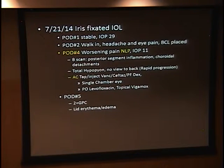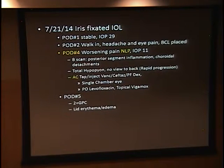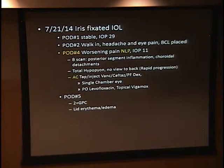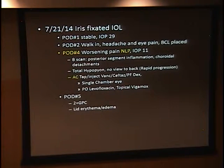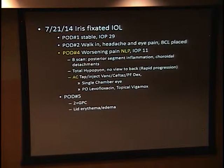We gave him more platelets and did an AC washout. After surgery his vision was hand motions but pressure remained elevated for several weeks, persistently at 29. Given that he seemed to be getting worse and worse, we decided to do an IOL exchange. He had an iris-fixated IOL placed and the AC lens was removed through a large corneal wound. Post-op day one he was stable with hand motions to counting fingers. The next day he had recurrent pain; we thought it was post-surgical with epithelial breakdown and placed a bandage contact lens.